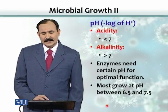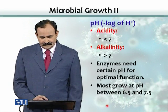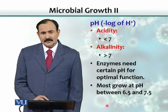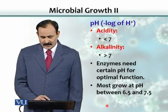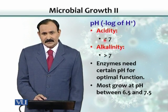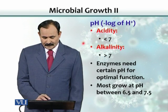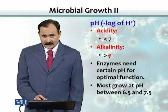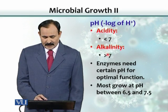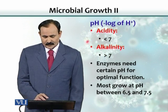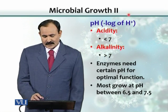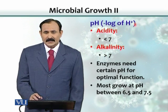Based on the pH, pH could be alkaline or acidic. If it is less than 7, we call it acidic pH or acidity. And if it is more than 7, it is called alkalinity or alkaline pH. The pH basically denotes hydrogen concentration.